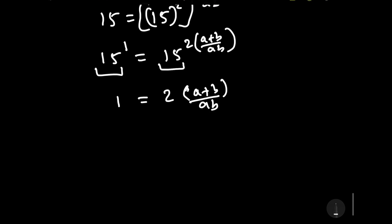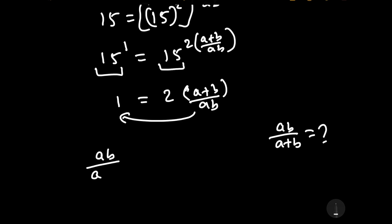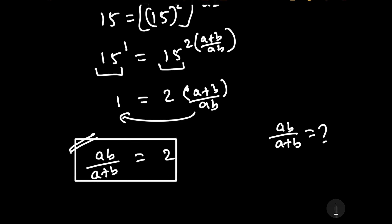We need to find AB upon A plus B. Rearranging, AB upon A plus B is equal to 2, and this is our required answer. Thanks for watching this video. Don't forget to like, comment, and share. Thanks once again.